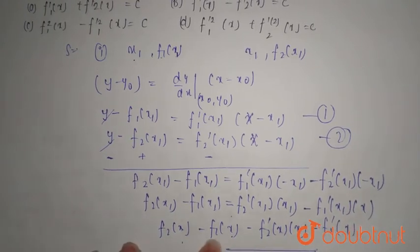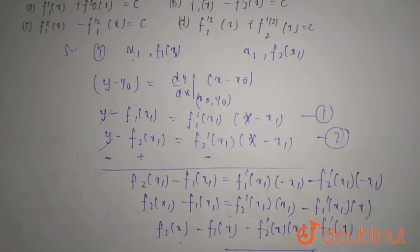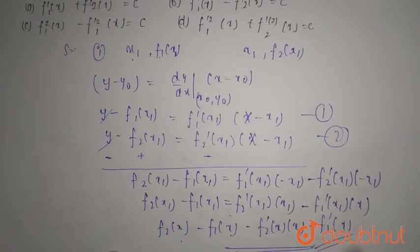f2(x) minus f1(x) equals x times f2'(x) minus f1'(x), so this is your right answer. Thank you.